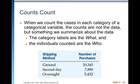The actual data themselves — for instance, here we've got the shipping method and the number of purchases. Those numbers are the counts, and those are a summary. The actual data would be a whole bunch of words like ground, second day, overnight, depending on what different individuals had chosen.